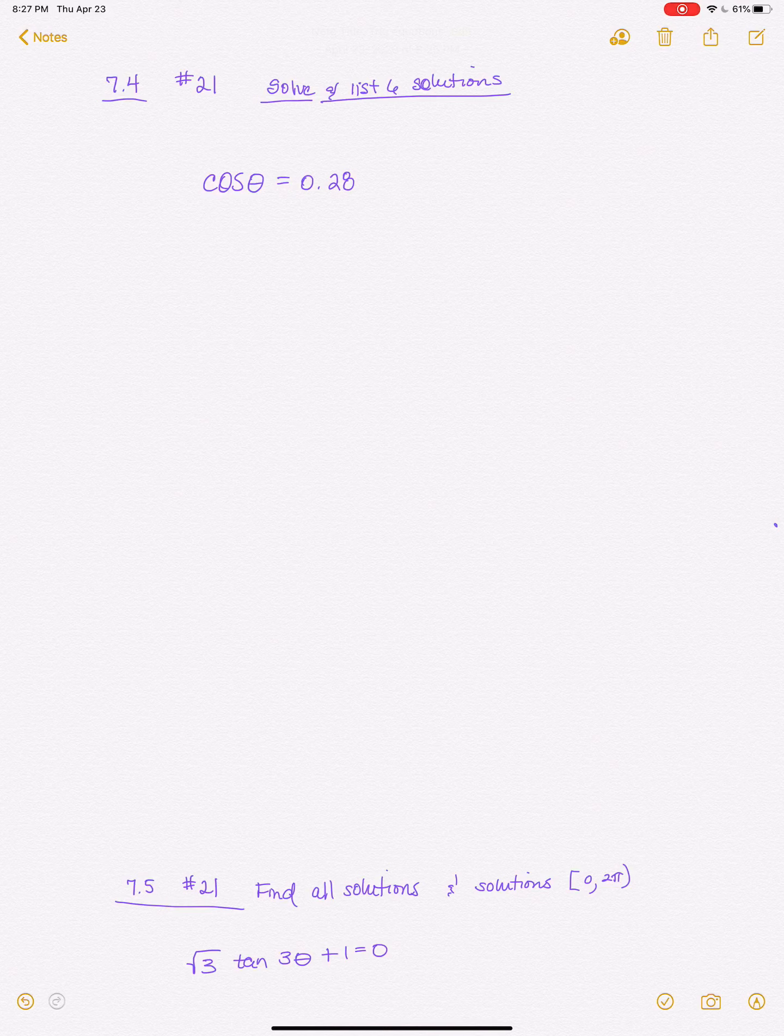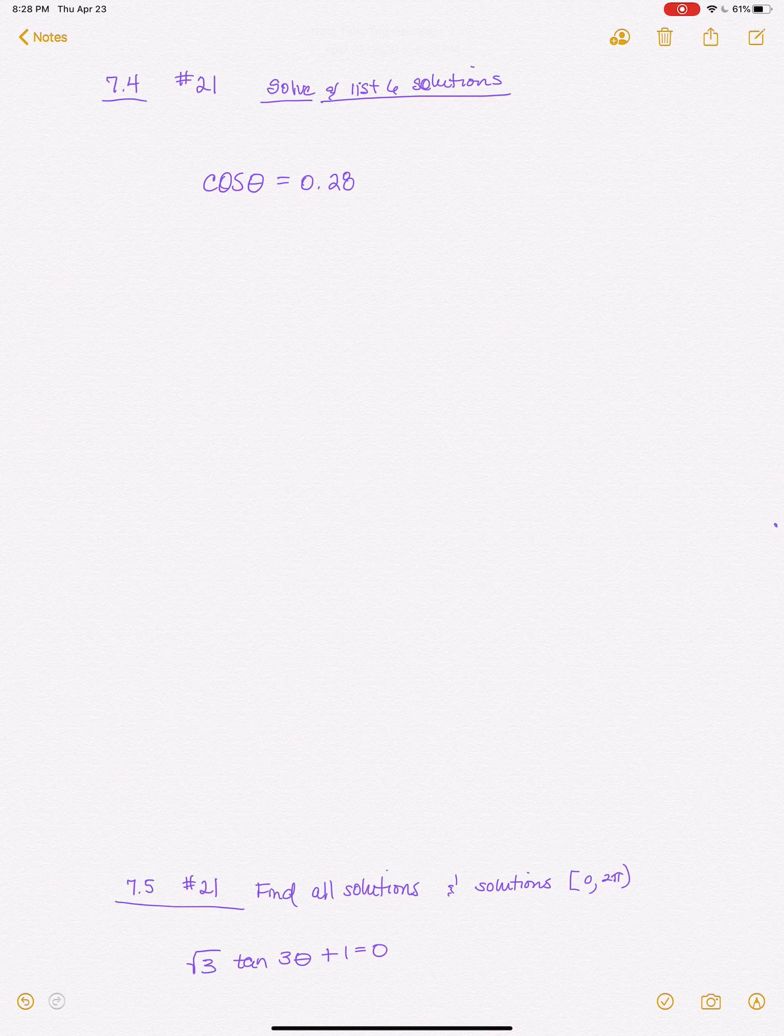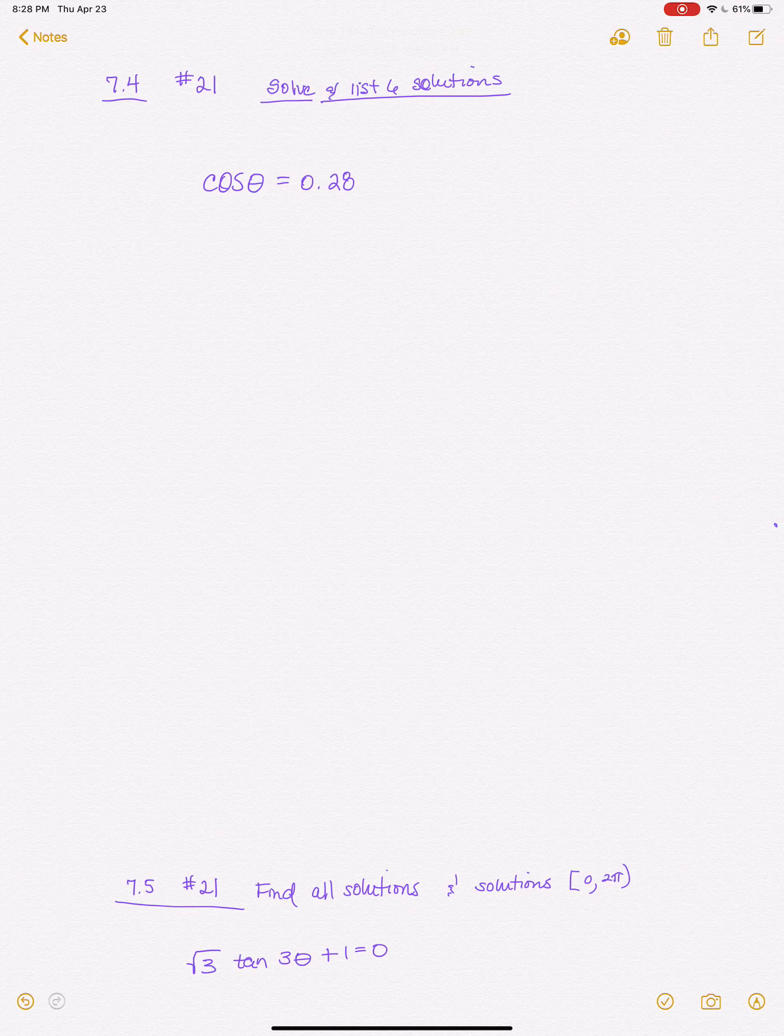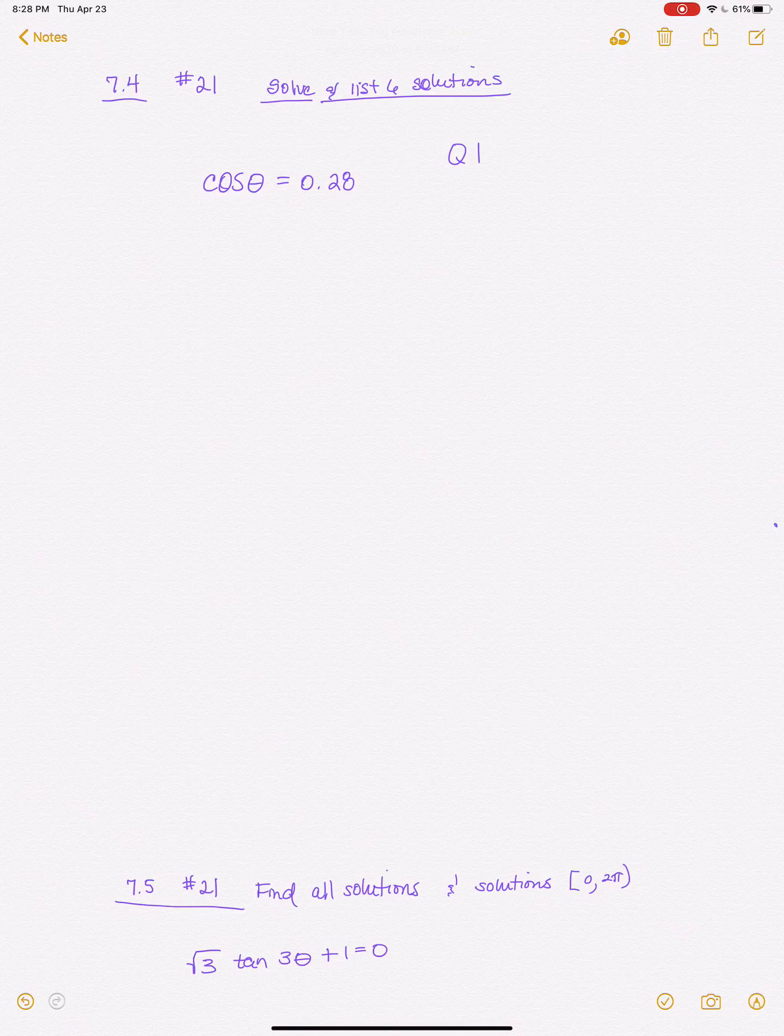Now I'm just looking to see what angles I could plug in and make that equation true. So notice that my cosine theta is positive, so it's positive 0.28 which means my two angles are going to come from where cosine is positive, which is all four are positive in quadrant one and then cosine is positive in quadrant four. So my two angles are coming out of that quadrant.